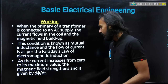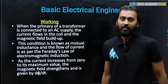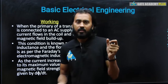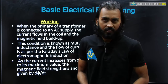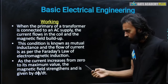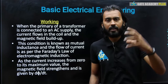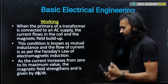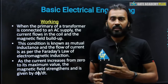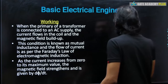As the current increases from zero to its maximum value, the magnetic field strengthens and is given by dφ/dt. The flux is directly proportional to the supply current — as you increase the current value, the flux will be set up. So with respect to time, as the current value increases from zero to its peak value, the magnetic field also strengthens depending upon the current.